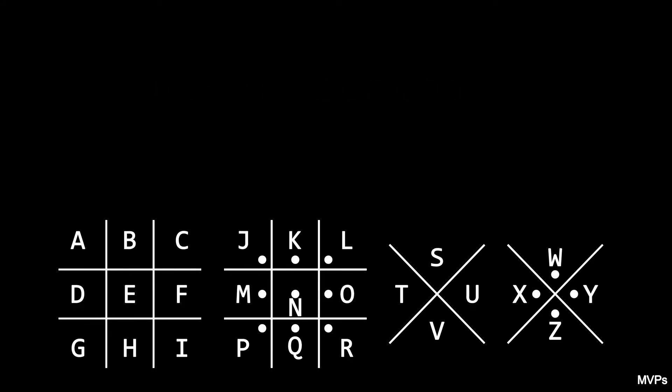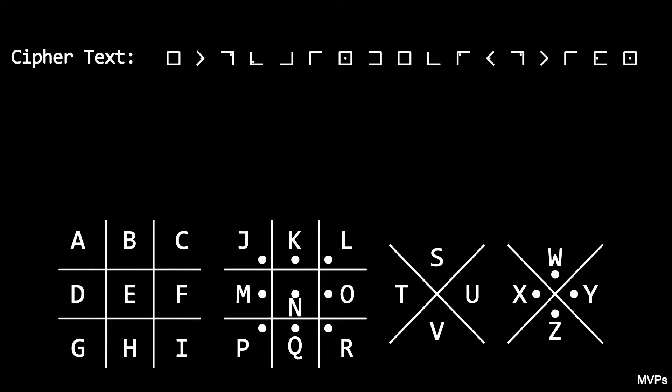To decrypt a message, we simply reverse the process. Take a ciphertext character and look at that shape in the key to find the letter it contains. So to decrypt this ciphertext, first we see the box with four sides is in the middle of the first tic-tac-toe board and contains the letter E.